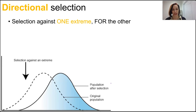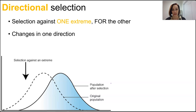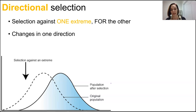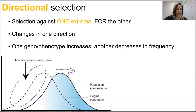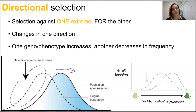Directional selection selects against one extreme and for the other, leading to changes over many generations in one particular direction. This is the type of selection the peppered moths underwent — one phenotype was favoured and kept while the other diminished in frequency. The bell curve shifts in one direction, with one trait increasing and another decreasing.